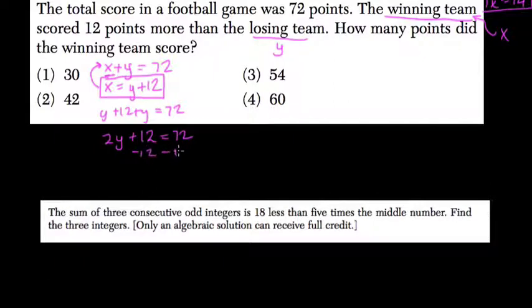Subtract 12 from both sides. This cancels out, so 2y equals 60, and y equals 30. Divide both sides by 2.